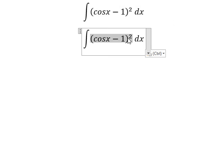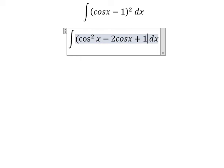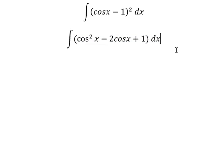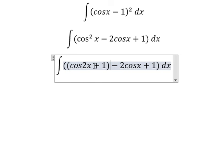We need to expand this one. Next, cosine x to the power of 2, we can put into cosine 2x plus 1 over 2.